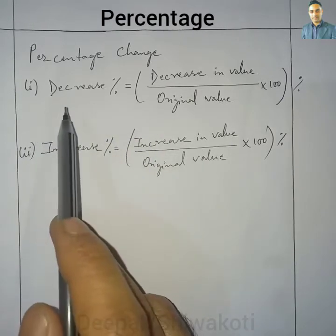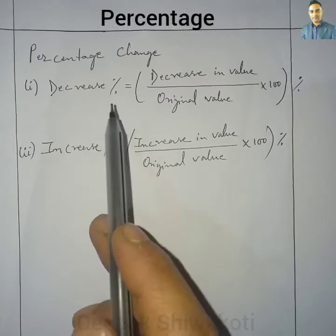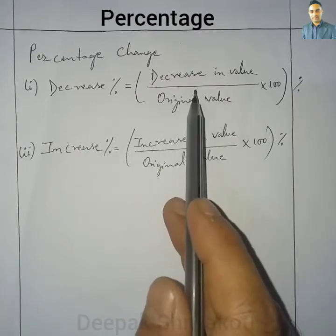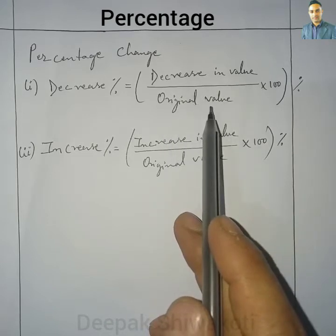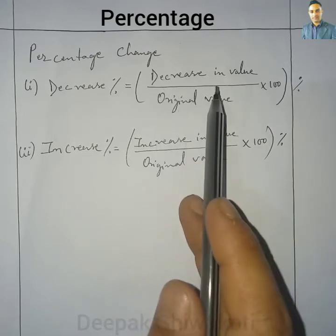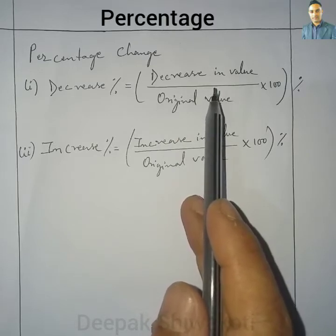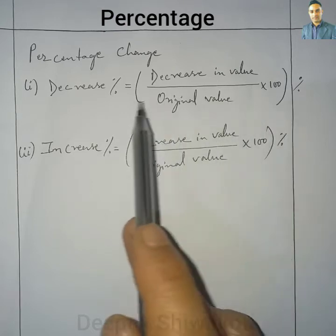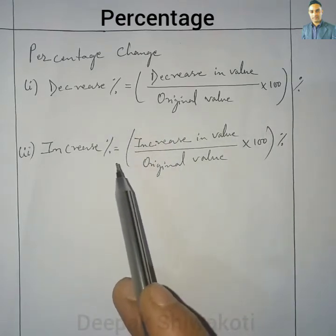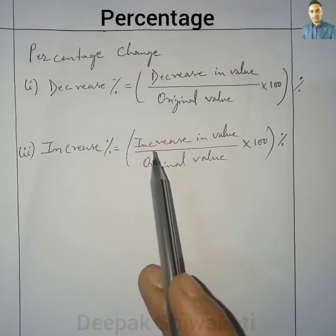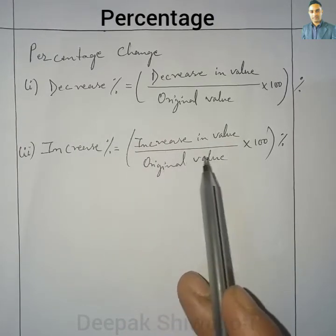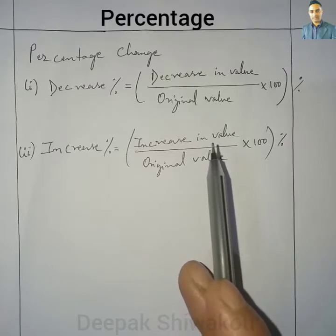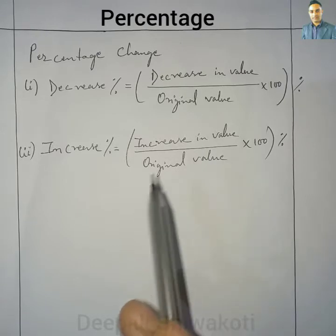Number one: decrease percent. How to calculate decrease percent is given by the formula: decrease in value divided by original value, multiplied by 100%. Similarly, increase percentage is given by increase in value divided by original value multiplied by 100%. These two formulas are important and we are going to use them to calculate a few sums.